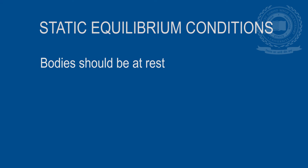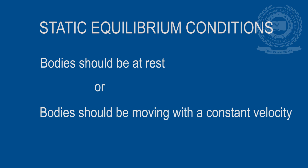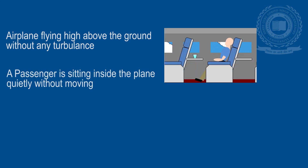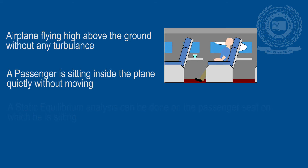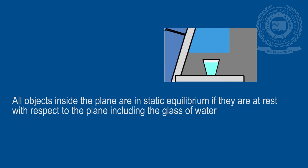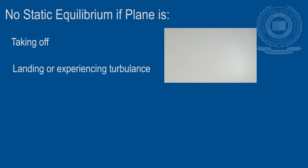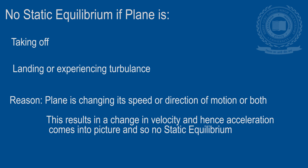However, equilibrium can also exist in moving bodies. Bodies moving with constant velocity are also in static equilibrium because of no acceleration. Take the case of a plane flying at 600 km/h at about 25,000 feet without any turbulence — a passenger sitting calmly watching a movie cannot sense the speed because of constant motion. A static equilibrium analysis can be done on the passenger seat, and even a glass of water kept in that plane is in static equilibrium. However, this will not hold true if the plane is taking off, landing, or experiencing turbulence, because now the plane is changing speed or direction, causing velocity to change, which results in acceleration, and the body loses its equilibrium state.